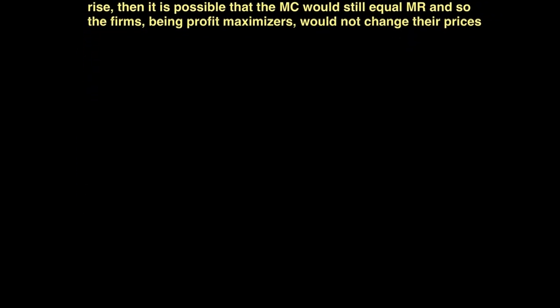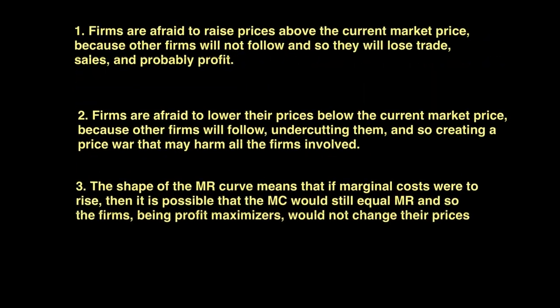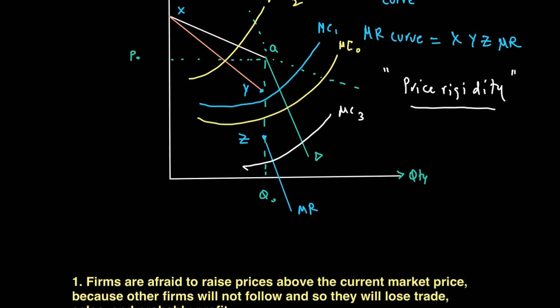The Kinked Demand Curve therefore makes some really important predictions. Number one is that businesses might be reaching a stable profit maximizing equilibrium at that price P0 and Q0 that we talked about. This will be what we call a stable price with little incentive to change the price.